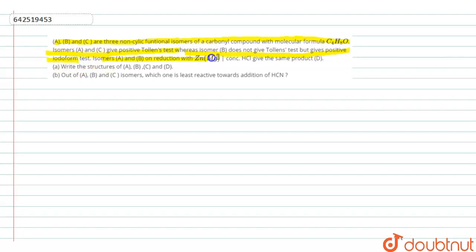Isomers A and B on reduction with zinc amalgam with conc. HCl will be giving the same product D. And they have asked to write the structures of A, B, C and D. And out of A, B and C, which is least reactive towards nucleophilic addition of HCN.